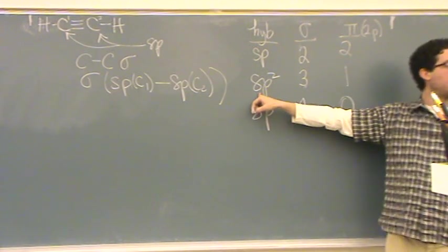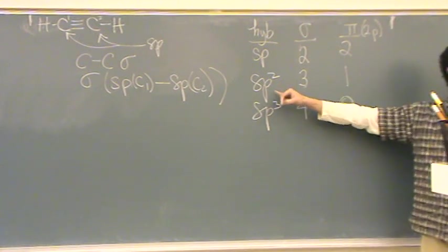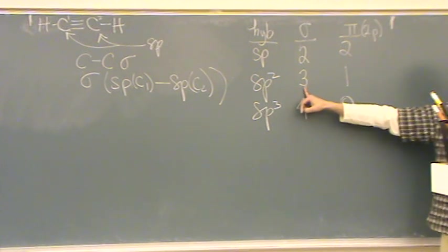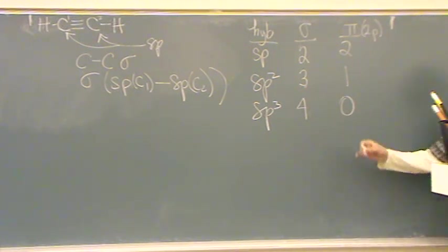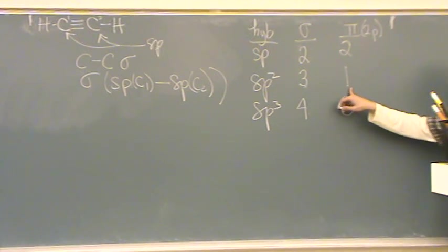For an SP2 hybrid orbital, there's three SP2 orbitals, and so they can form three sigma bonds if they want to. There's one leftover 2P, and that leftover 2P can form a pi bond.